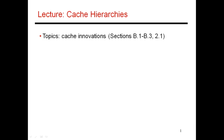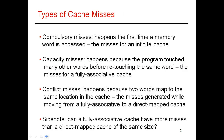In this video, I'm going to discuss some basic properties of caches, and then I'll move on to various cache innovations in the next videos. The first thing we need to understand is what leads to a cache miss, and once you understand that, you can then introduce innovations to either reduce miss rate or reduce miss penalty.